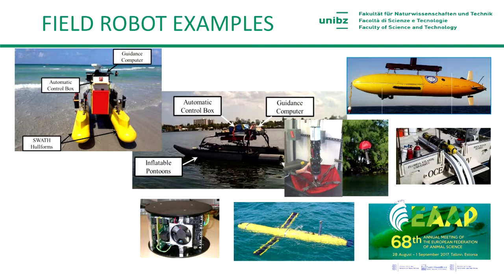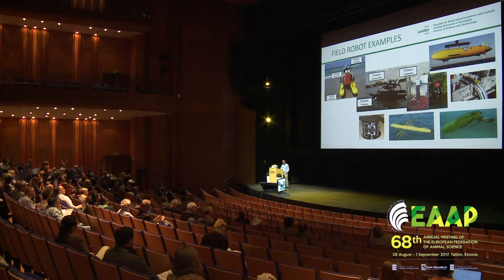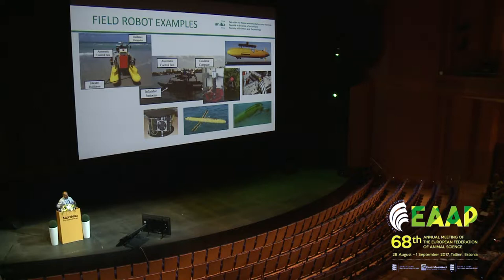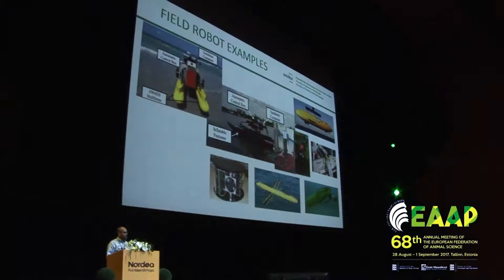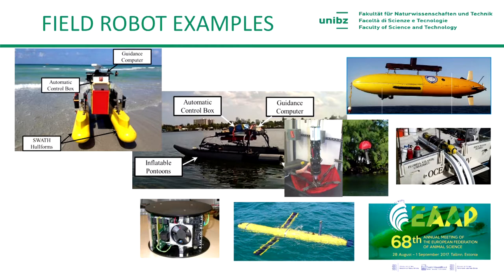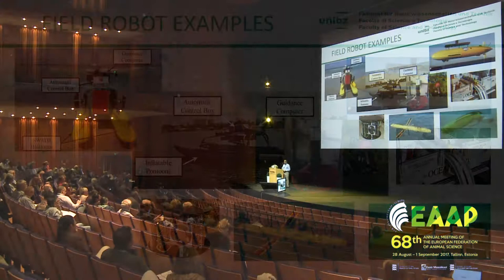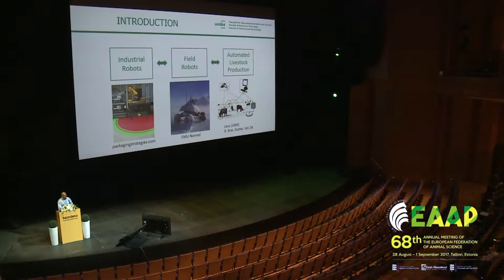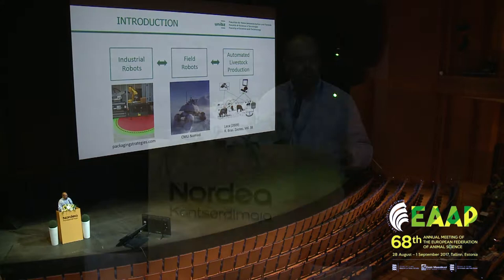For those unfamiliar with what a field robot is, before coming to the University of Bolzano, I was for many years at Florida Atlantic University, where I studied marine-related field robots. When you're working out in the field, you have many uncontrolled variables — things like storms, waves, animals that intrude, people on jet skis. Some of the issues Professor Bewley mentioned about raccoons eating cables are things you also contend with in field robotics. My research sits sort of in the middle of automated livestock production and industrial robotics.